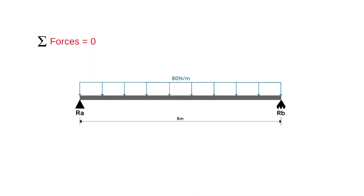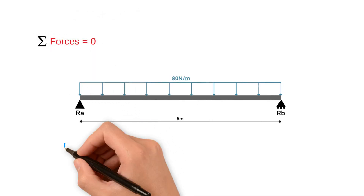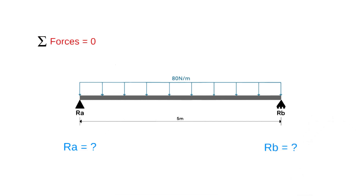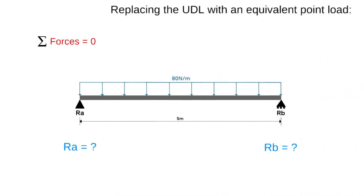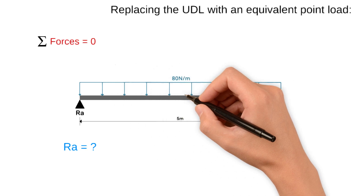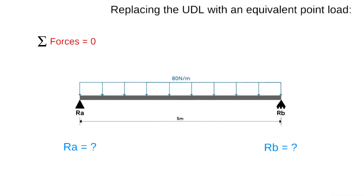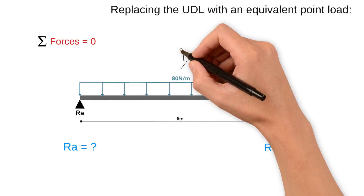Our goal is to find the support reactions at RA and RB. To simplify the problem we can replace the UDL with an equivalent point load. The magnitude of the equivalent point load for a UDL like this one is equal to the area under the distribution and is located at the centre of the distribution.